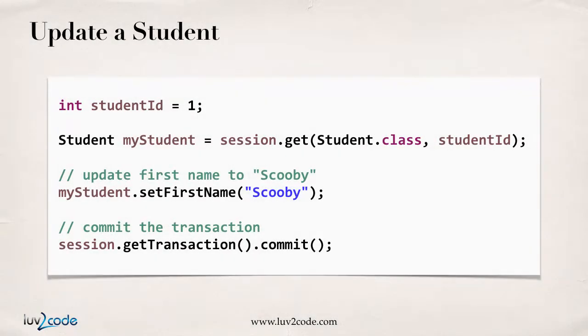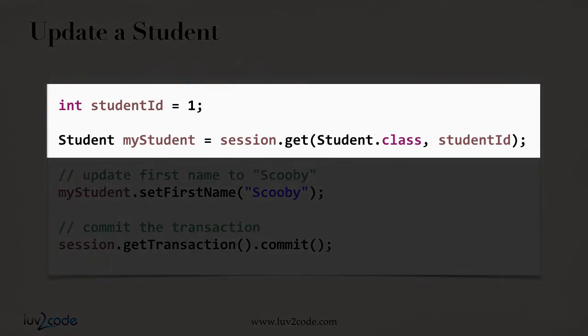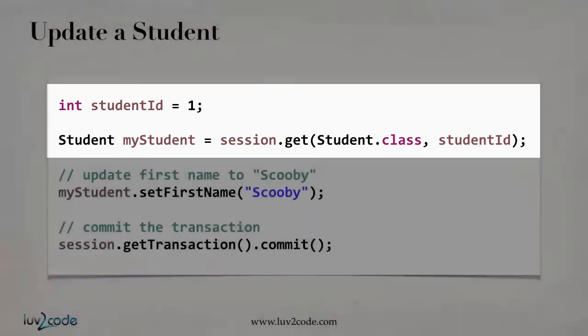So here's an example of how to update a student. Let's say, for example, we already have a transaction created and we've already started a transaction. Then, what I want to do is get a student using the primary key. Using information from the previous videos, I'll say session.get(Student.class, studentID). I set the student ID to 1 in the previous line, so that will give me a student object. I've retrieved a student object from the database.